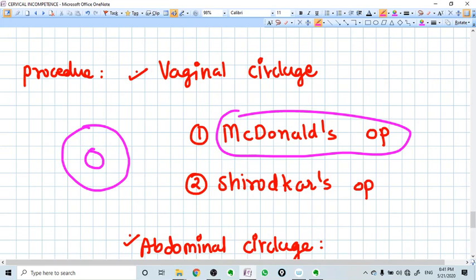How is McDonald's surgery done? This is the cervix. You start with your needle and put your first nick here, then second nick here, then third nick here, then fourth nick here, and here is the knot. In all this direction, you do a continuous suture.